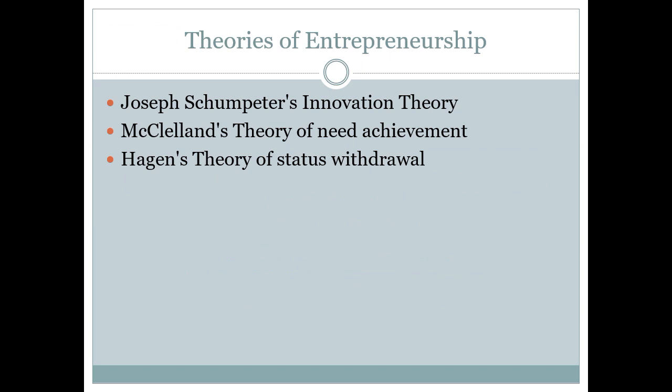As we discussed in the last lecture, you will be studying a total of 3 theories in Entrepreneurship. The first one is Joseph Schumpeter's Innovation Theory. The second one is McClelland's Theory of Need Achievement. And the third one is Hagen's Theory of Status Withdrawal.